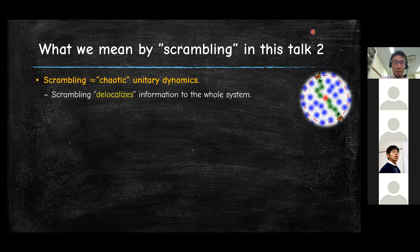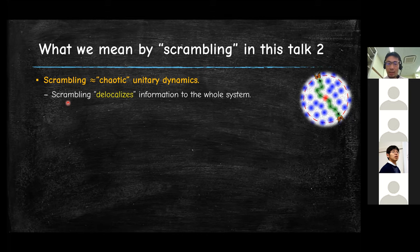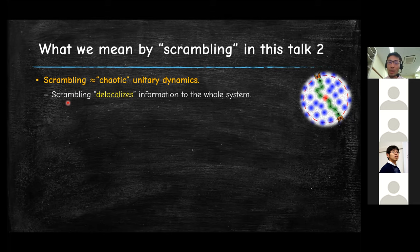Let me start with what we mean by scrambling. When we say scrambling, we often mean chaotic unitary dynamics. Intuitively, it's a kind of unitary dynamics in a quantum chaotic system. We expect that if scrambling is happening in a many-body system, information which is initially localized in a tiny part of the system spreads to the whole system, so we cannot access the information by looking only at a local region. This delocalization of information is the intuitive understanding of scrambling.